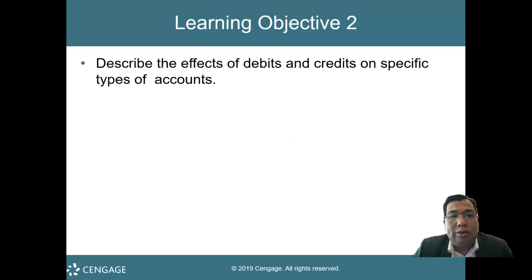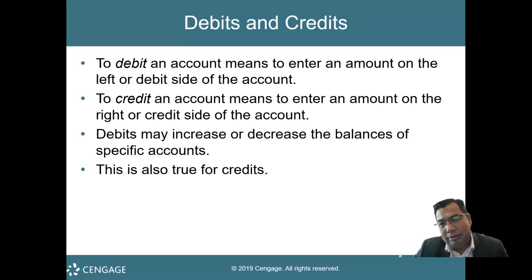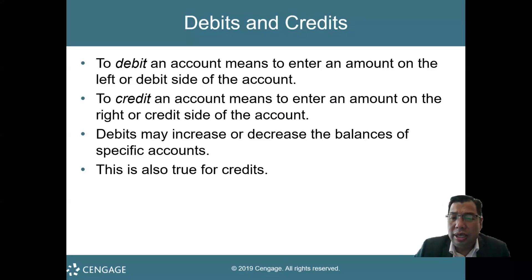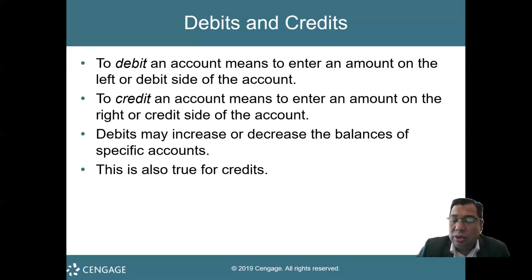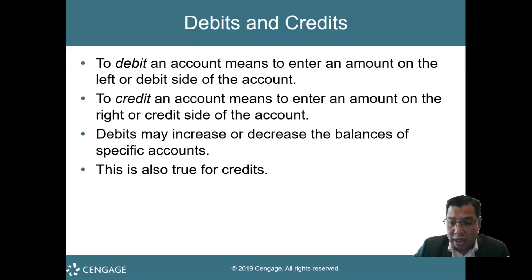Now we move to the second part. I'm going to describe the effect of debit and credit on specific types of accounts. I did mention the words 'to debit' and 'to credit' — what do they mean? To debit means we're going to enter an amount to the left side or to the debit side of the account. To credit means that you are going to enter that amount — for example, $100 — to the credit side or to the right side. To debit means entering the amount on the left side; to credit means entering the amount on the right side. Your action will result in an increase or decrease in the accounts.